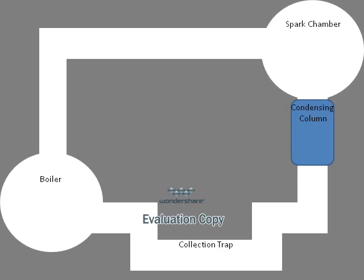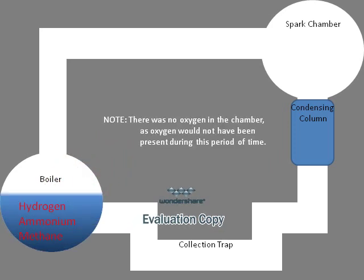We proceeded to pump out all air from the chambers and pump in water, methane, ammonium, and hydrogen, all of which are hypothesized to have been in Earth's early atmosphere.